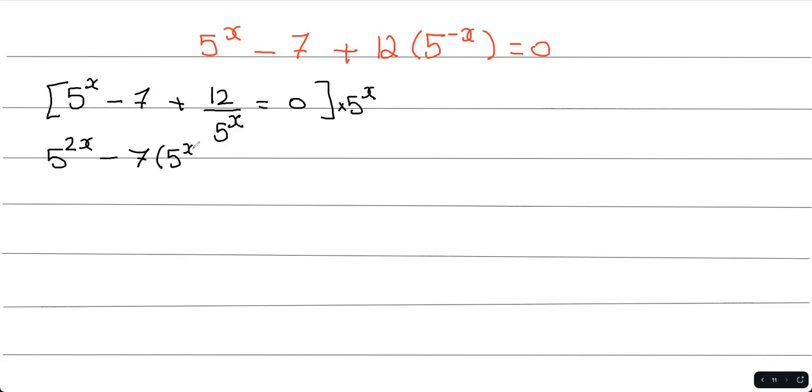5 to the power of x plus 5 to the power of x times 12 over 5 to the power of x. The 5 to the power of x cancels, and you get 12 equals 0.